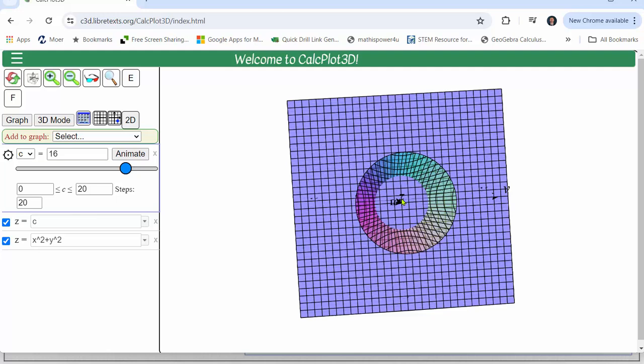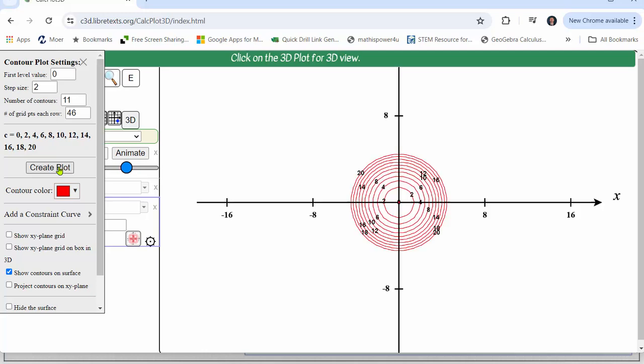Before we go though let's look at a contour map or a set of level curves for the given function. Here's a possible contour map or a set of level curves for the function. Notice the labels on the curves, these represent the function values or z values.